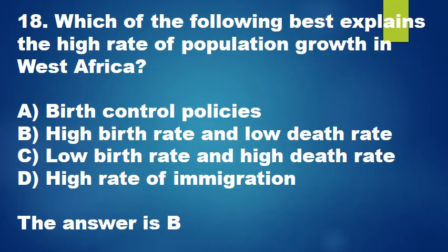Question 18: Which of the following best explains the high rate of population growth in West Africa? A. Birth control policies, B. High birth rate and low death rate, C. Low birth rate and high death rate, D. High rate of immigration. The answer is B.